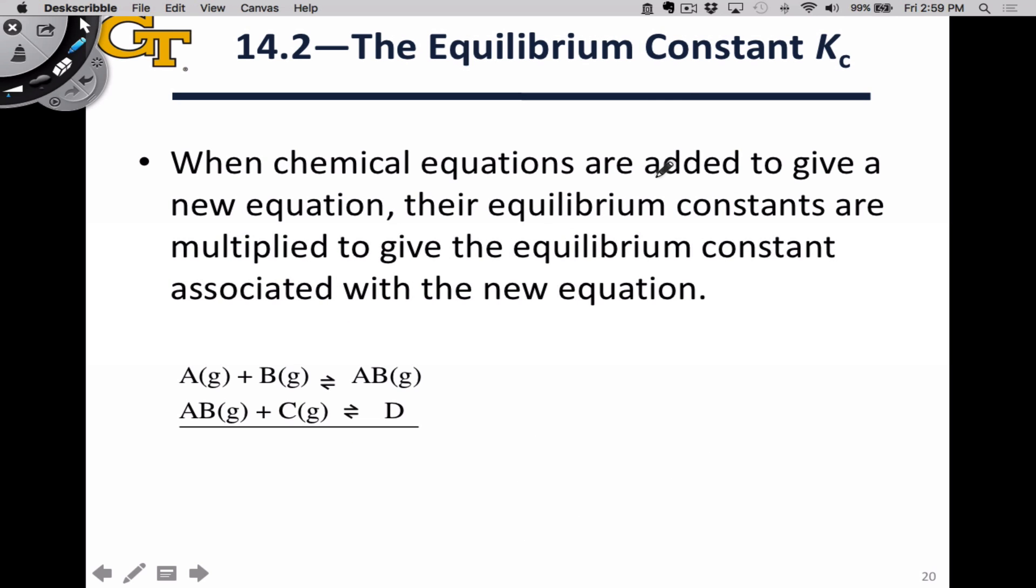When we add chemical equations to give a new equation, the equilibrium constants are multiplied. And again, just for practical purposes, applying these ideas, keep in mind the rules of logarithms, because they're going to be helpful here. When we add chemical equations, we multiply their equilibrium constants.